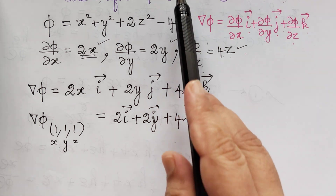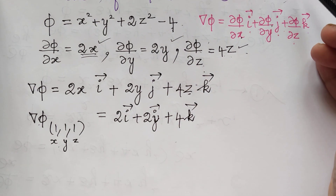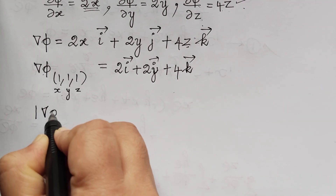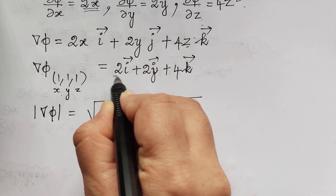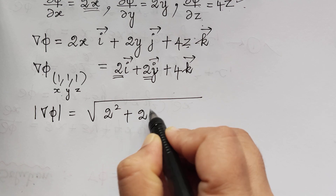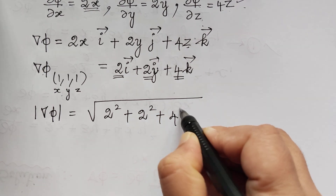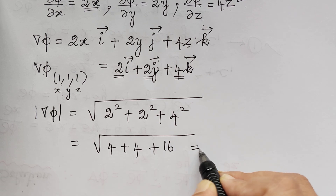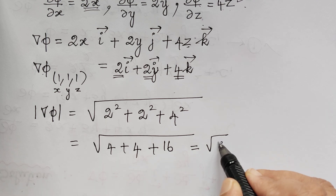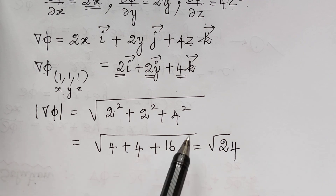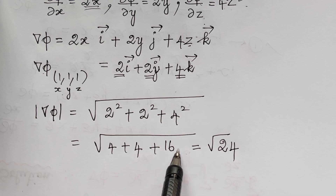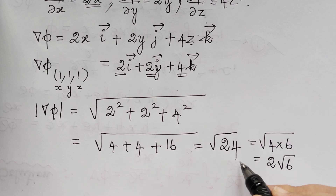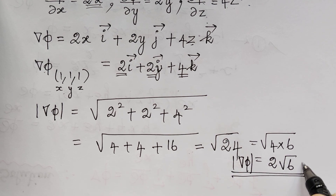Now we have found ∇φ, so we have to find its modulus. The modulus of ∇φ = √(2² + 2² + 4²) = √(4 + 4 + 16) = √24 = 2√6.